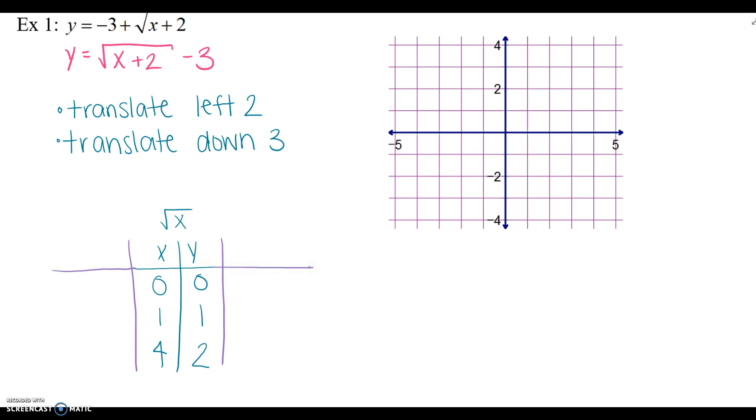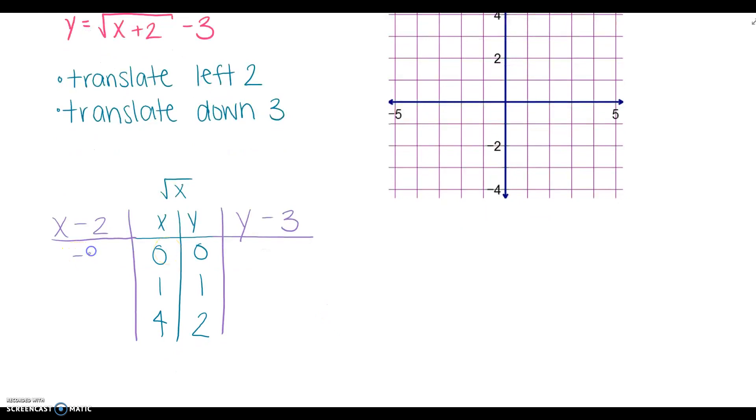So if it's being translated left 2, our x values are going to decrease, and if it's going down 3, our y values are going to decrease as well. Remember, when you're making your table, this comes from the words. It does not come from the equation. All right, and then we substitute. So what's 0 minus 2? What's 1 minus 2? And 4 minus 2. And what's the original y minus 3? So negative 3. 1 minus 3. And 2 minus 3.